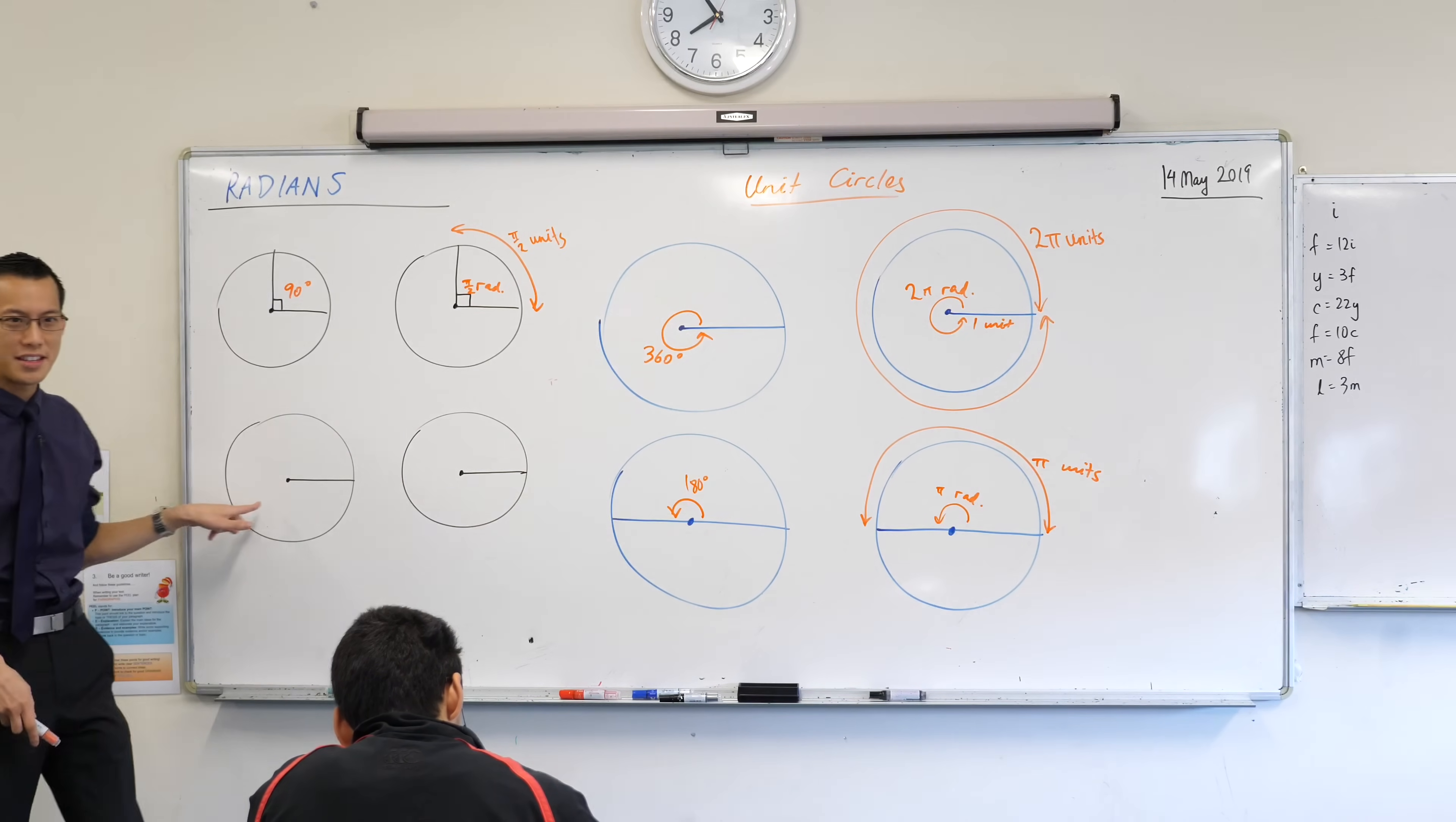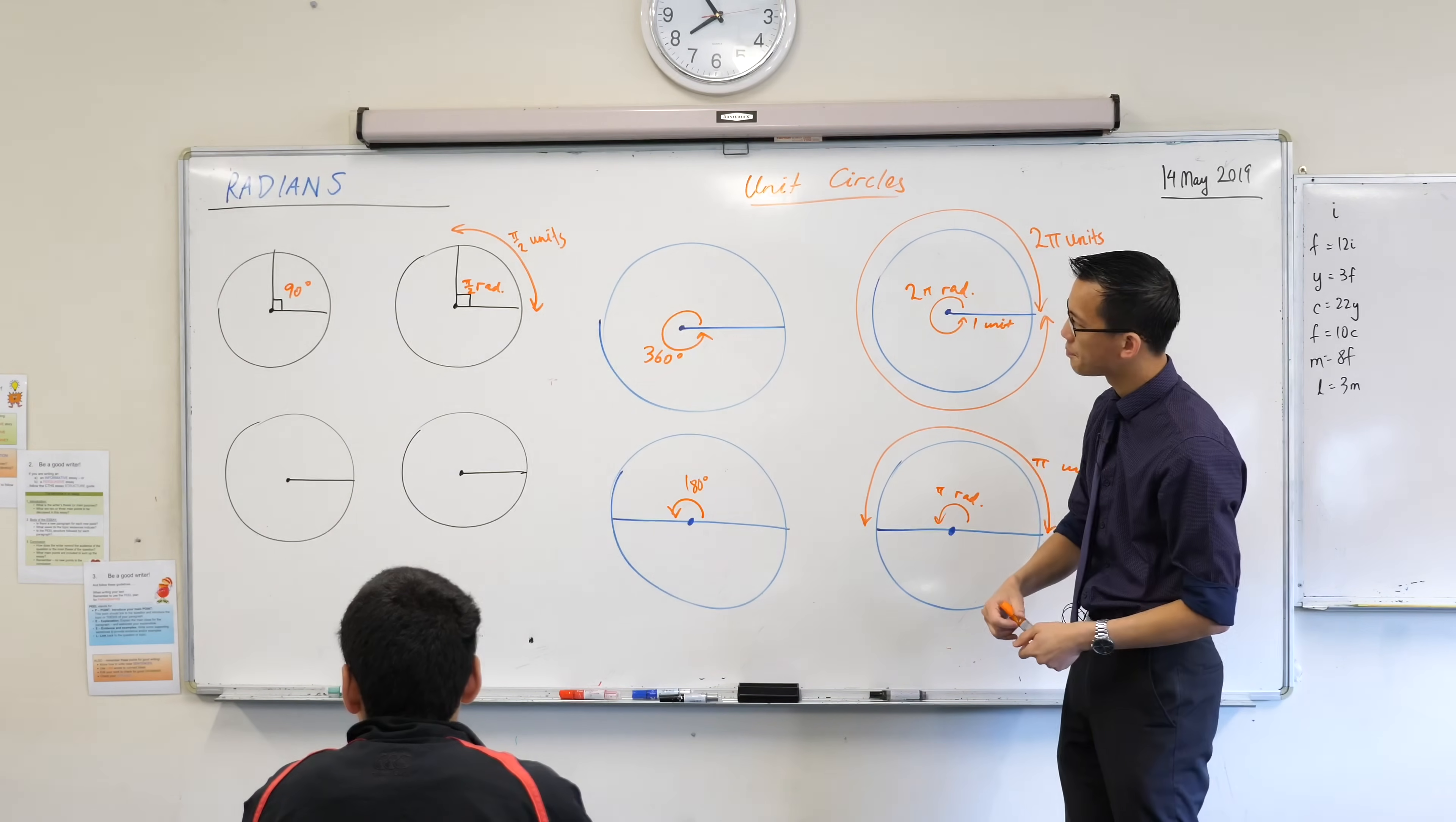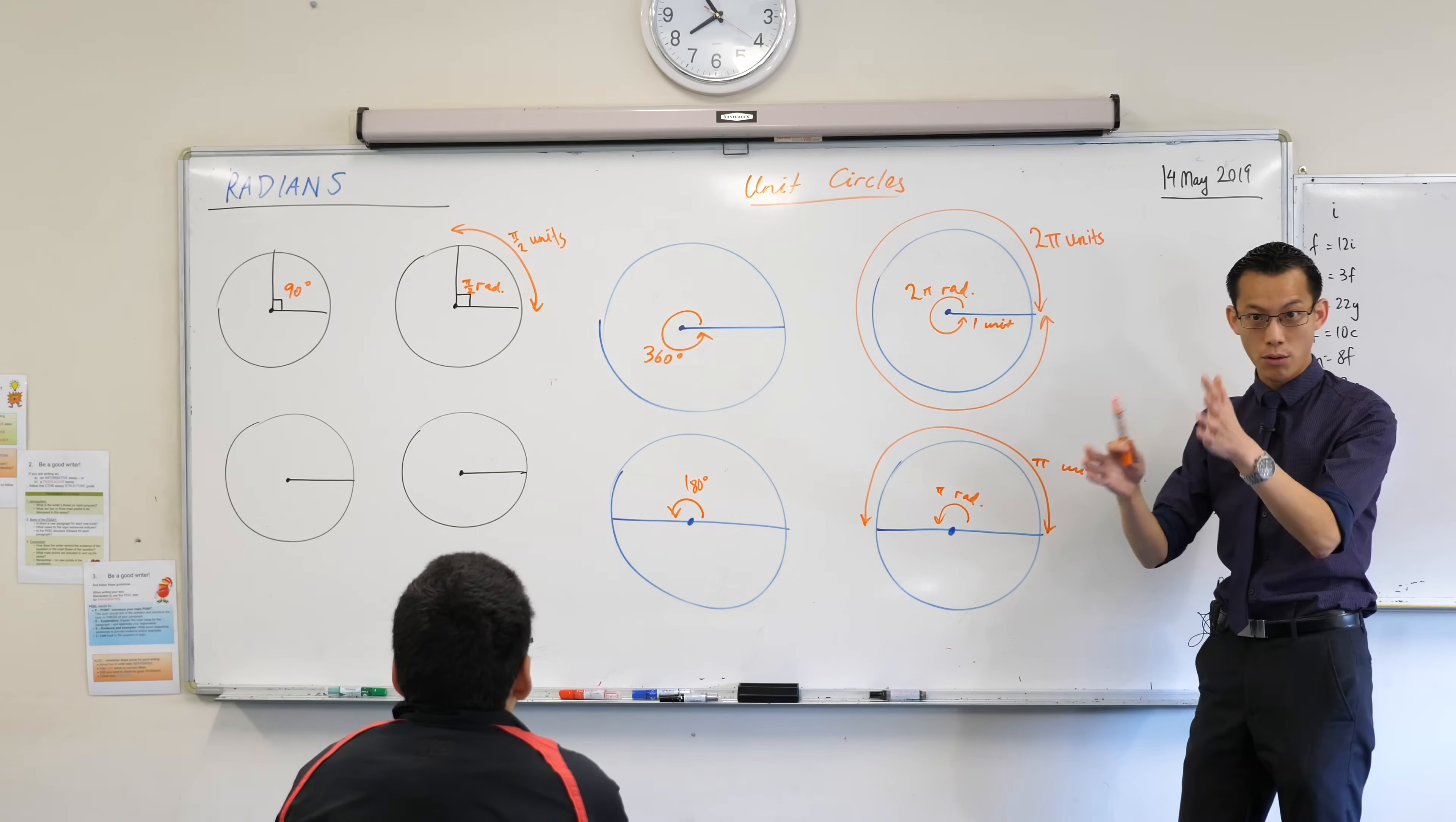All right. Now then the last one, this mystery one, right? We're trying to get to what we know what a degree is. We know what 90 of them look like. What does a radian look like? You've got some information on here that can help you out, right?